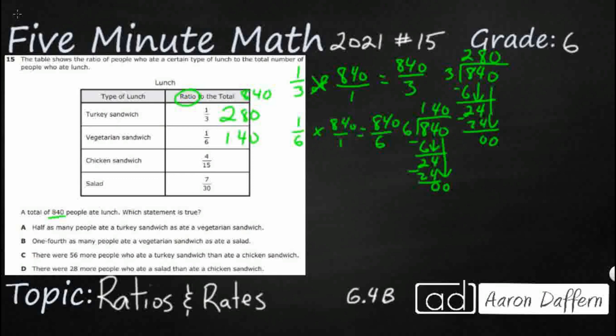Which does make sense, because if you do one-sixth plus one-sixth, you're going to get two-sixths, which is equal to one-third. So one-sixth is actually half of one-third, and 140 is half of 280. That makes sense.